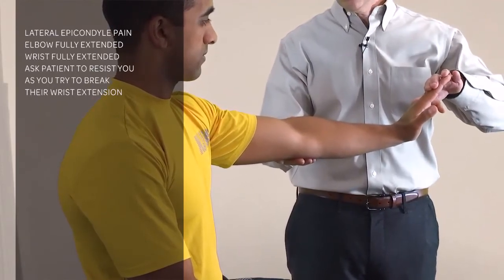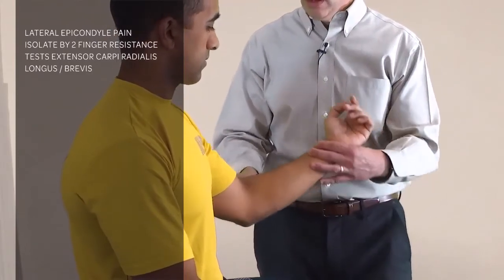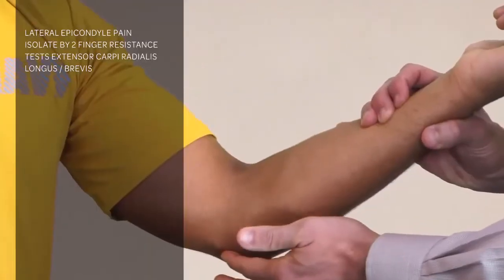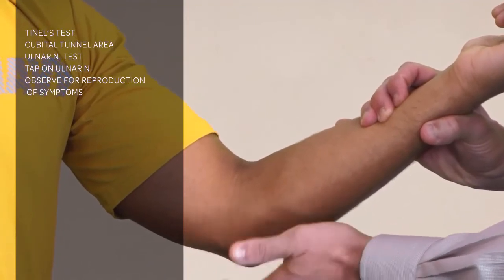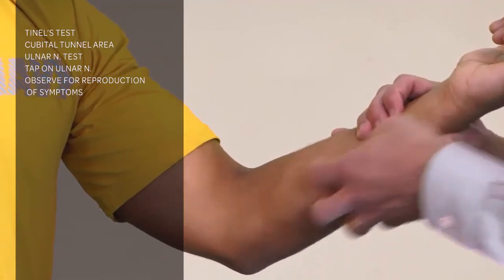That's testing the extensor carpi radialis brevis and the extensor carpi radialis longus. Finally, you can do a Tinel's test at the cubital tunnel, testing for the ulnar nerve by tapping on it and seeing if they get reproduction of symptoms along the ulnar nerve distribution. That completes the elbow examination.